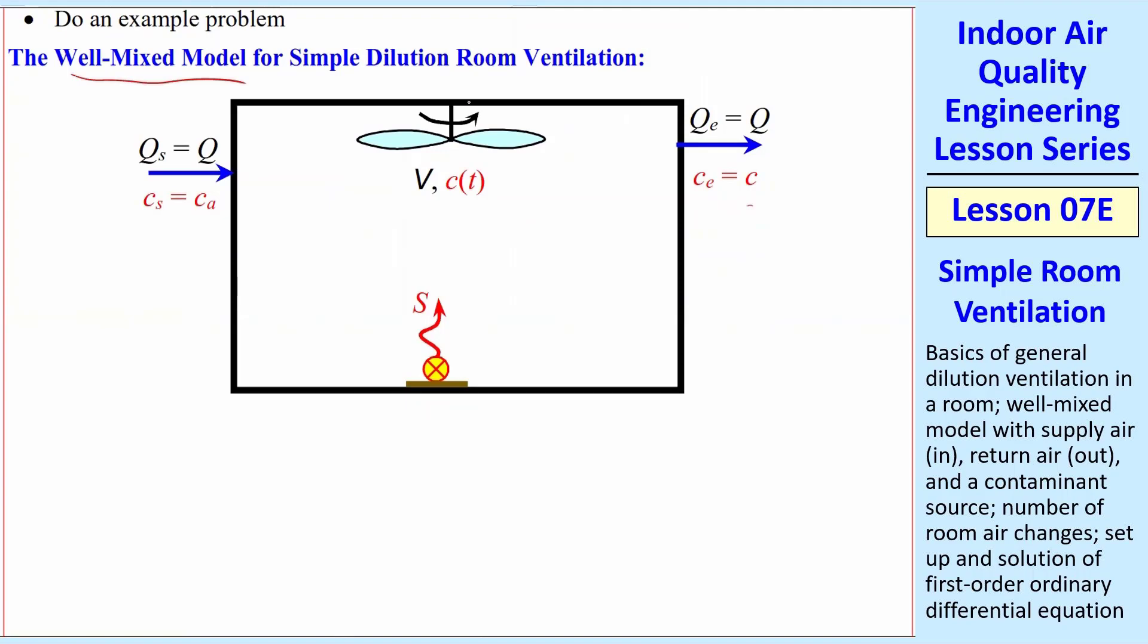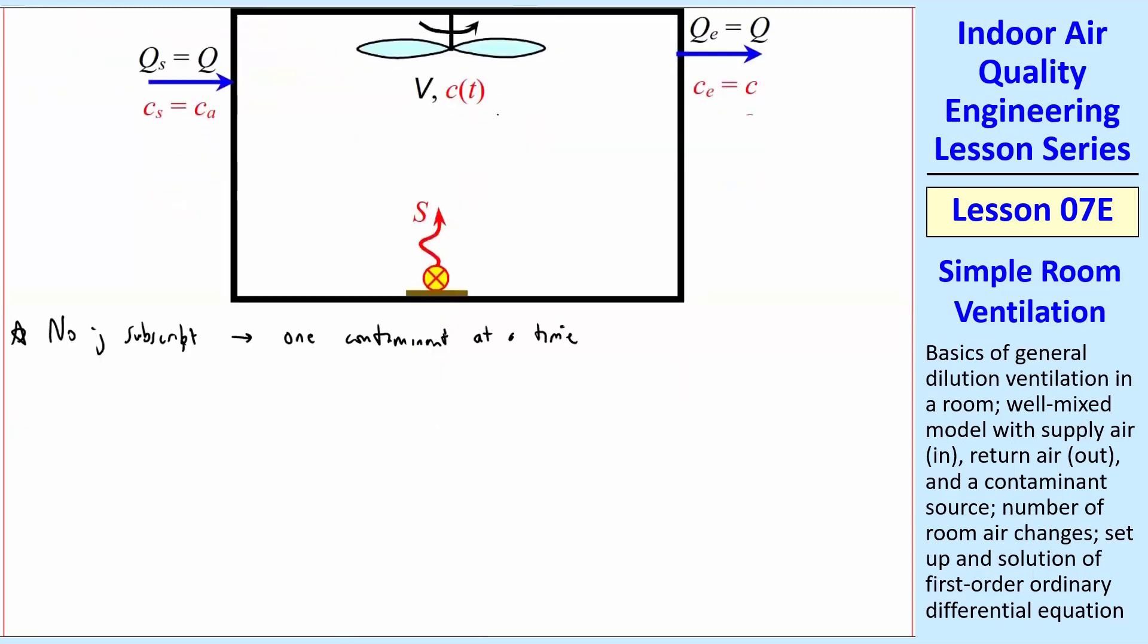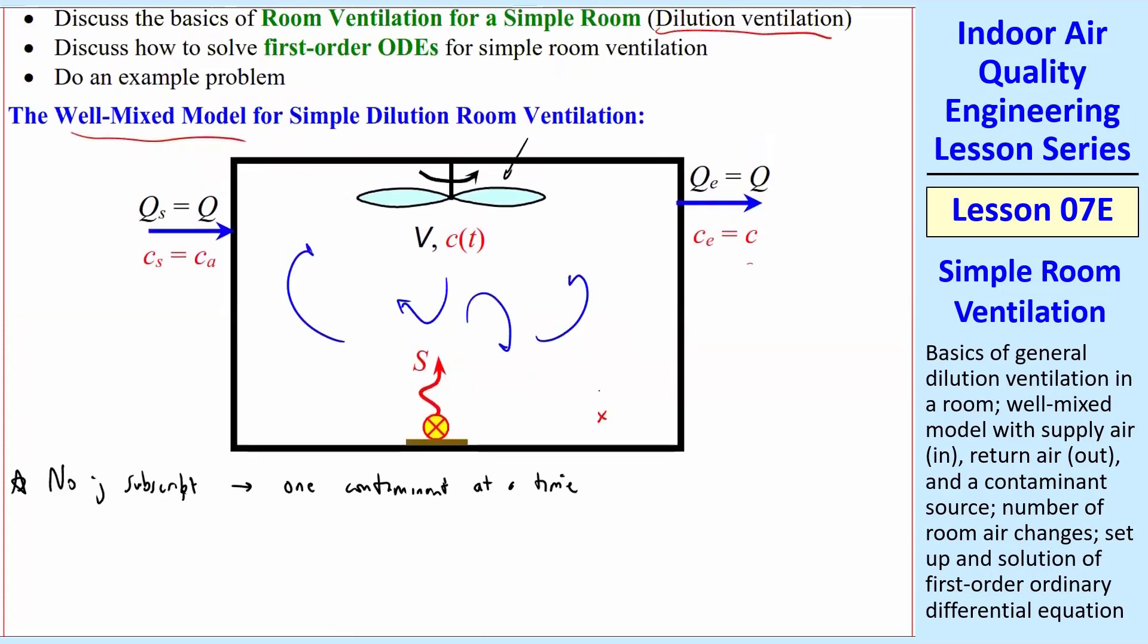Let's look at the well-mixed model. All we have in this room is some kind of a source of contaminant. We have a volume of the room, C, the mass concentration as a function of time. We have some supply air coming in that's at a certain concentration, Ca or Cs. And then we have exhaust coming out, which is also equal to Q. That's why I have this fan shown up here mixing up the air. That just means that the concentration here or here or here or here is all the same. So C is only a function of time.